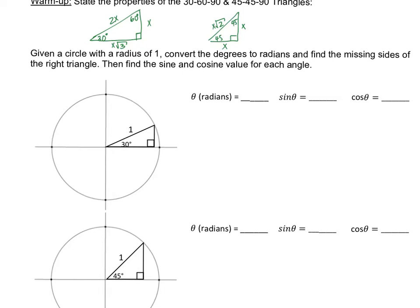In an earlier lesson, we learned that pi is equal to 180 degrees. So if we are converting, our angle is 30 degrees — we can multiply it by pi over 180, making sure the degree is in the bottom so we can cancel out the units. So 30 and 180: 30 divides into 30 once, and 30 goes into 180 six times. If I multiply straight across, 1 times pi is pi, and this leaves just a 6 in the denominator. So 30 degrees is also pi over 6.